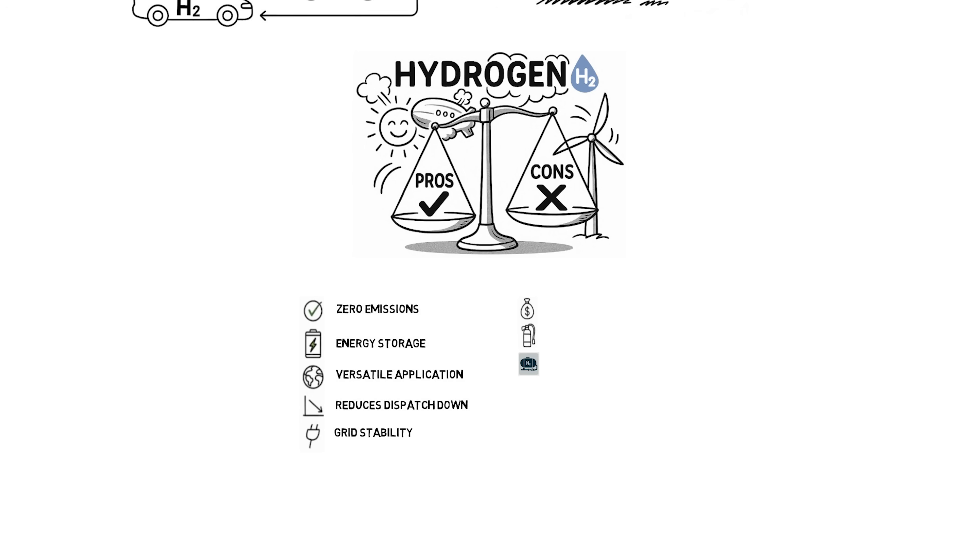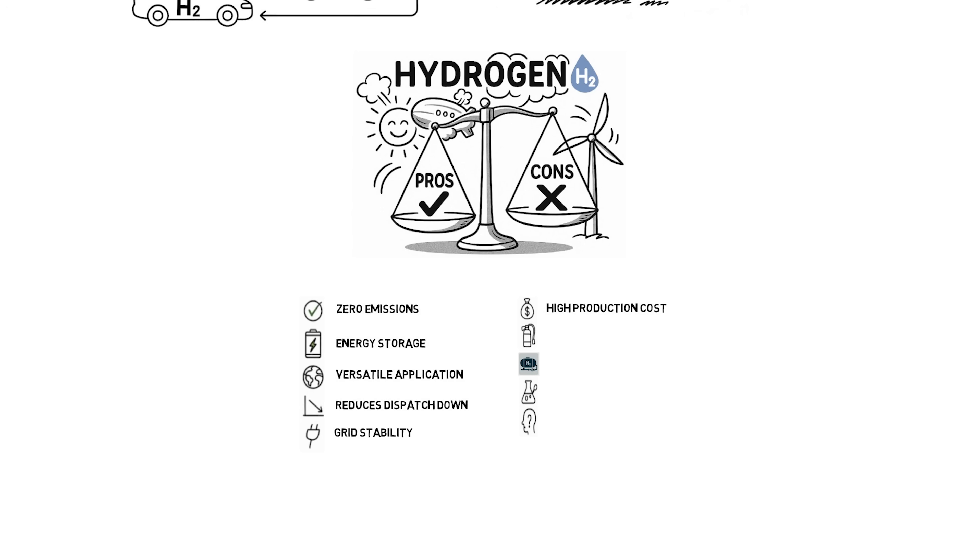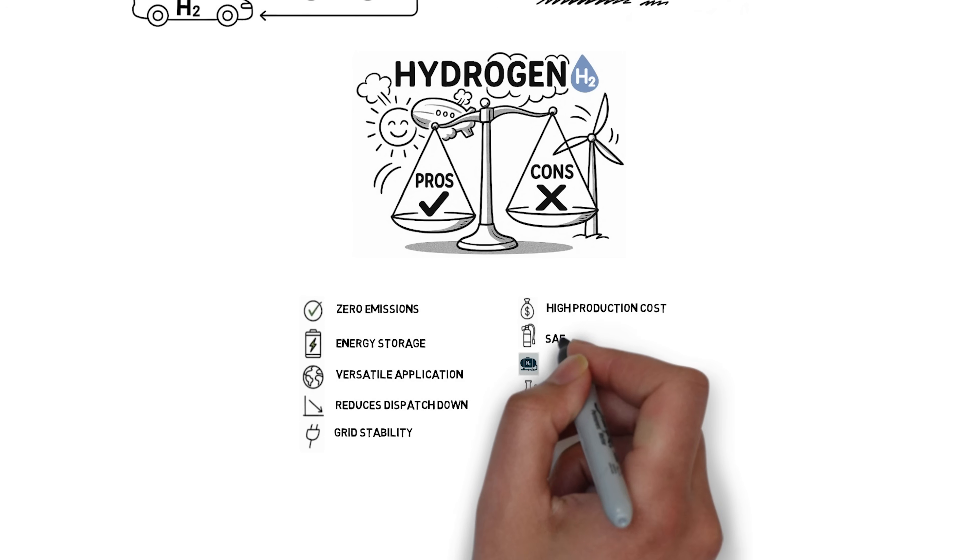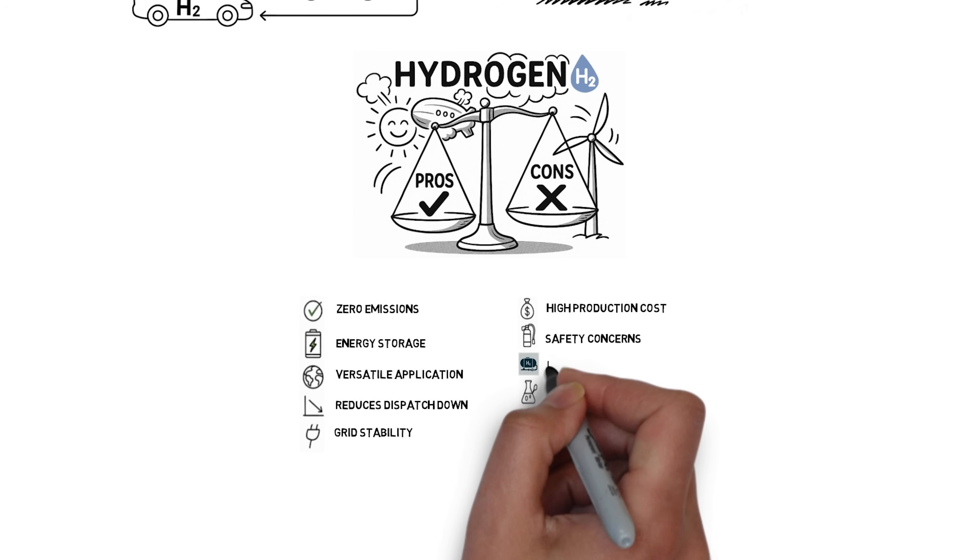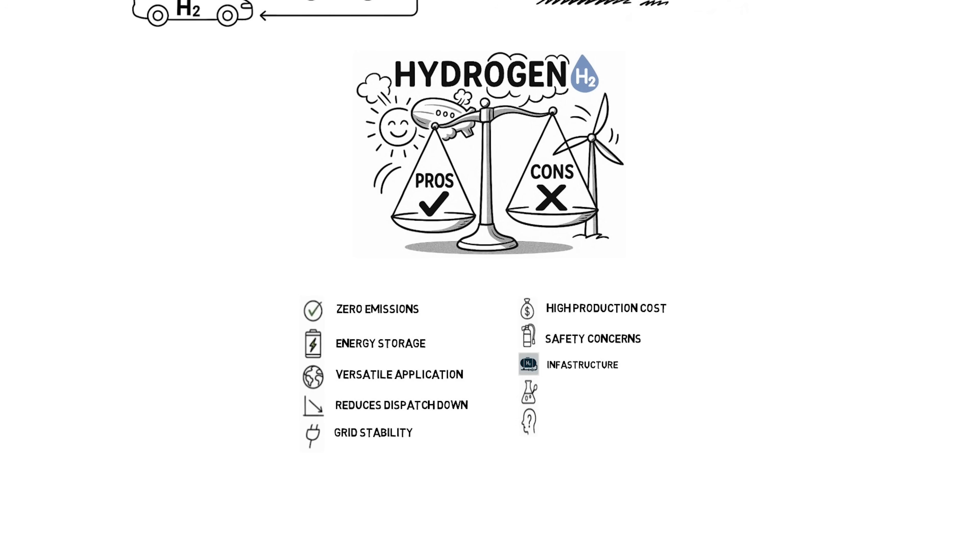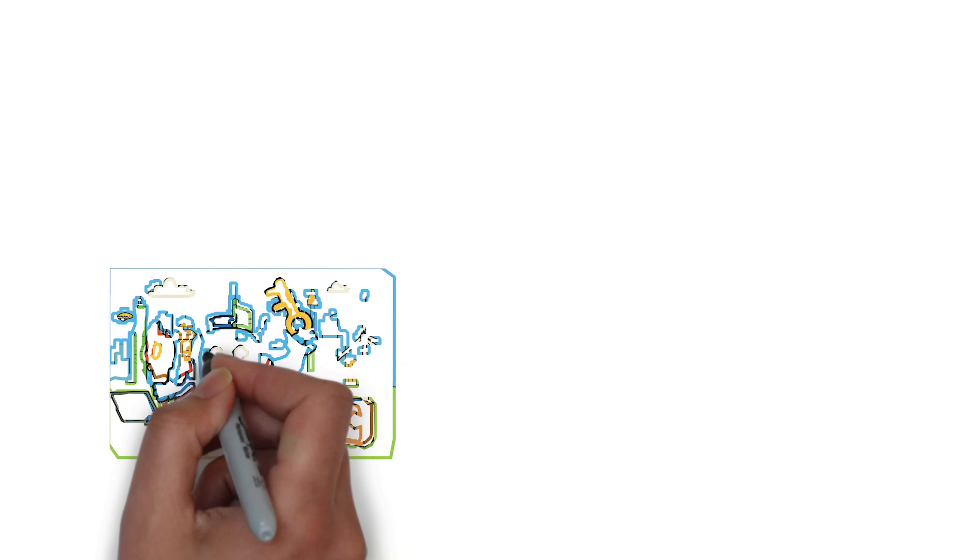Now, the cons. Producing green hydrogen is still expensive, and the process of electrolysis demands a lot of energy as we've seen earlier. Safety is a concern. Hydrogen is highly flammable and invisible, requiring careful handling. Infrastructure is another hurdle. Specialized pipelines, storage tanks, and refueling stations are costly and limited. And finally, public skepticism and policy competition can slow down adoption. In short, hydrogen is a super fuel with massive potential. But unlocking it will require smart investment, innovation, and collaboration.